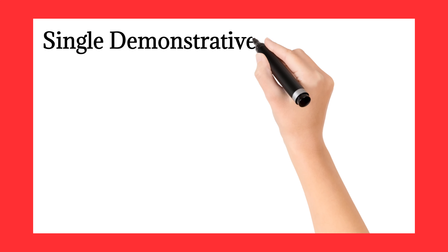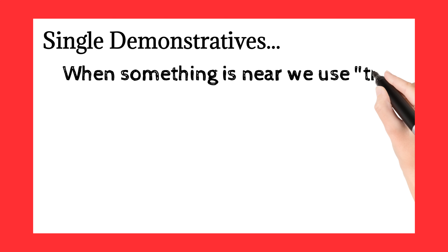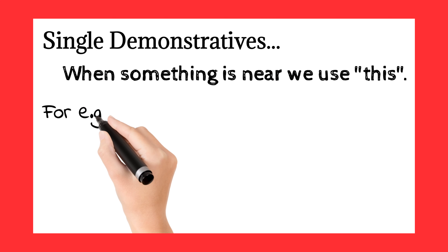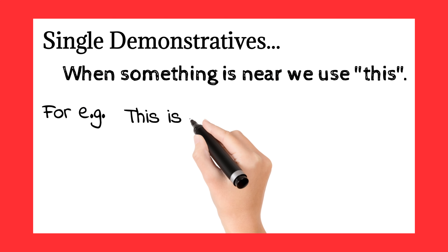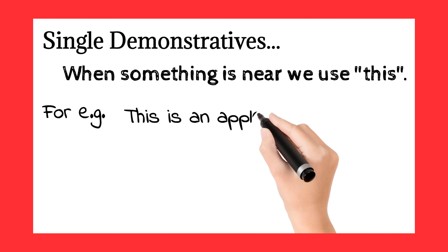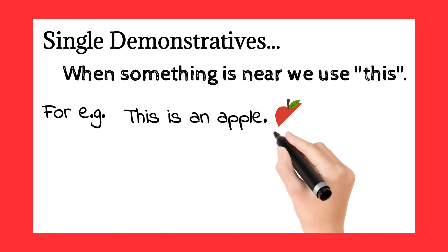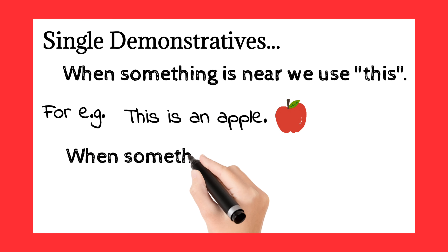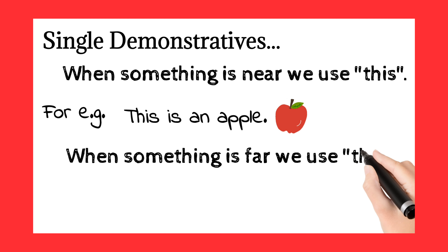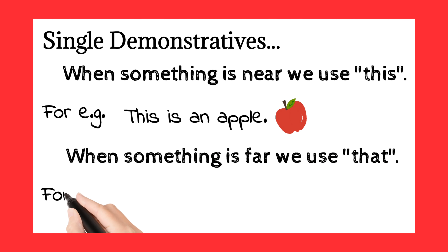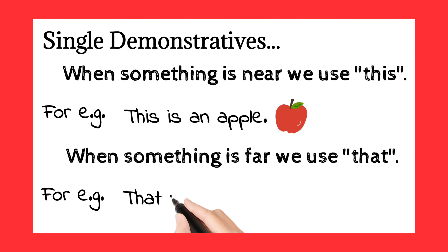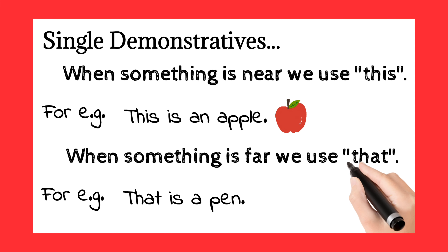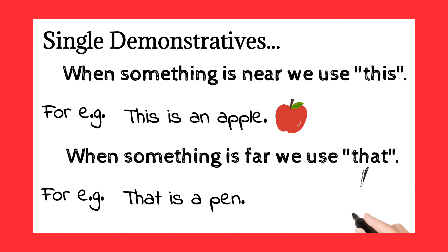Let's see singular demonstratives. When something is near, we use 'this'. For example: this is an apple. When something is far, we use 'that'. For example: that is a pen.